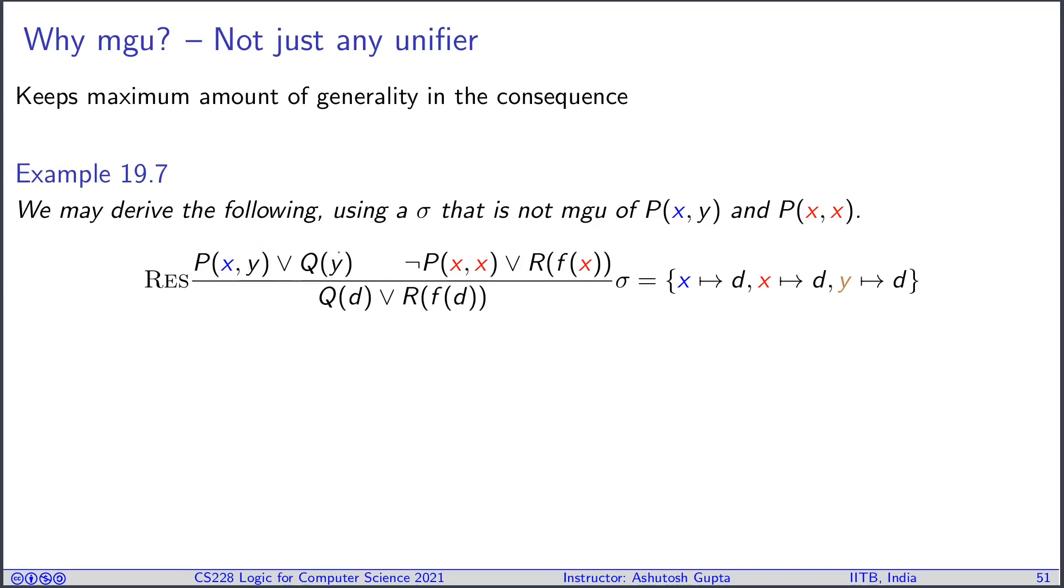Let's look at an example. We saw this clause and this is another clause. What we could have done is X maps to D, this red X also maps to D, and Y maps to D. If you do that, this becomes P(D,D) and not P(D,D), and then you can now resolve and get the conclusion Q(D) or R(F(D)). Please check yourself also.